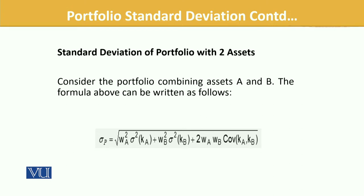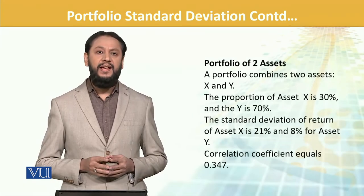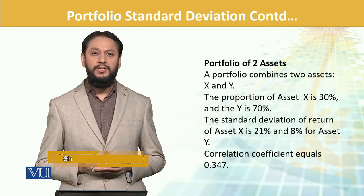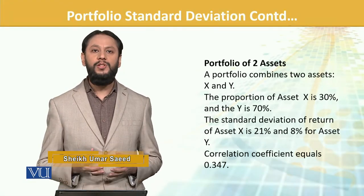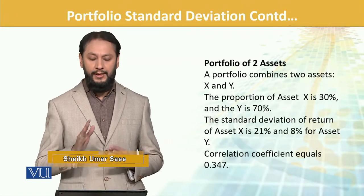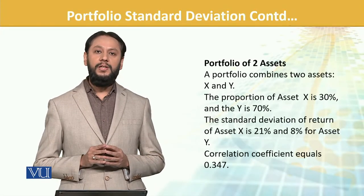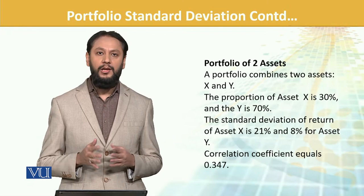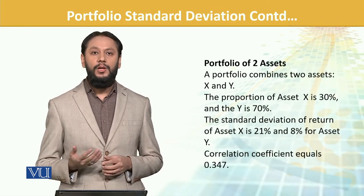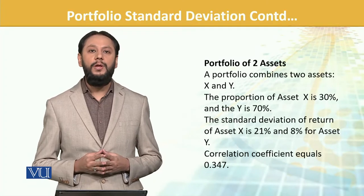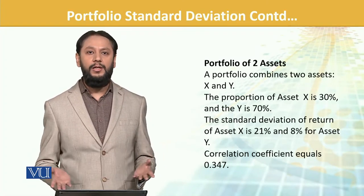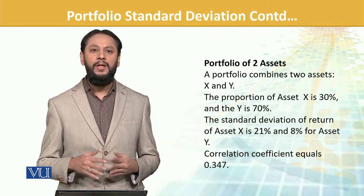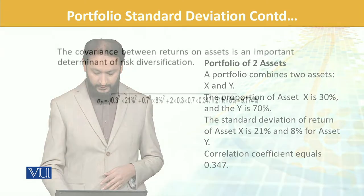Let's do an example of a two-asset portfolio combining assets X and Y. The proportion of X is 30% and Y is 70%, capturing how much is invested in each. The standard deviation of returns for X is 21% and for Y is 8%. You can see the large variation. The correlation coefficient is given as 0.347 — you could also calculate it through the covariance formula, but for simplicity it is provided here.